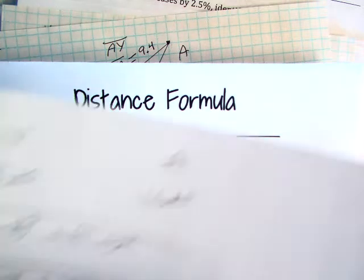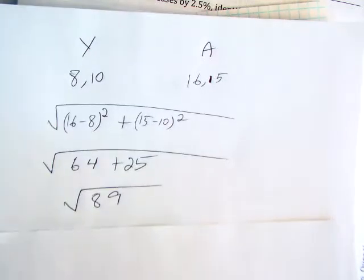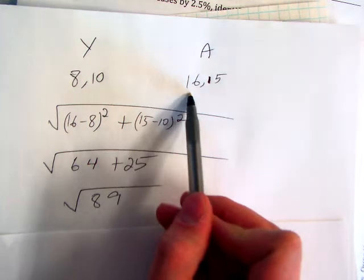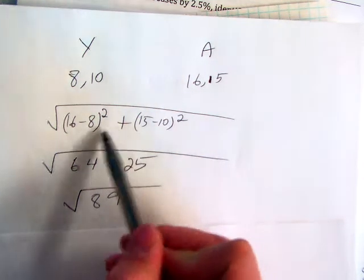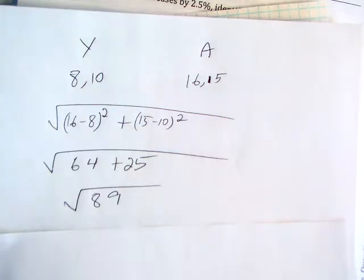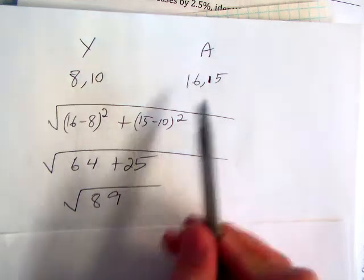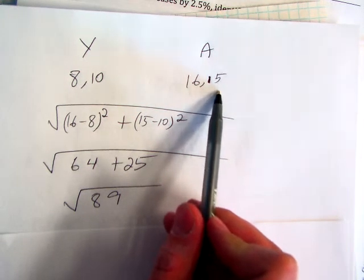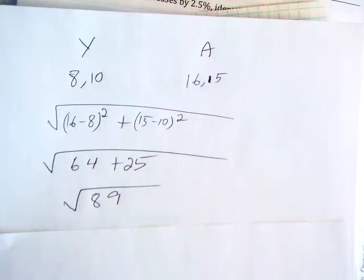So, if we're going to plug in points Y and A, we will take 16 as our second X-coordinate. It goes in first. Minus our first X-coordinate, minus 8. 15 is our second Y-coordinate, and we subtract our first Y-coordinate. When we subtract those and square them, and we add them together, we get the square root of 89. If you take that in your calculator, that's where you get 9.4.